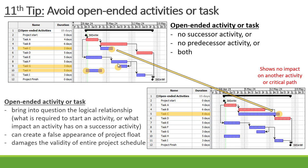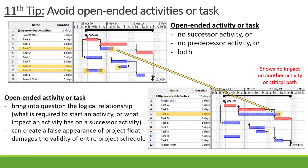So why should we avoid open-ended activities? First of all, it brings into question the logic relationship within a project schedule. We don't know what is required to start an activity if there's no predecessor activity, or what impact an activity has on a successor activity if it's not linked to a successor. It can also create a false appearance of project float, as you might not know the correct float of an activity if it's not linked to a predecessor or successor. And lastly, it can also damage the validity of your entire project schedule.